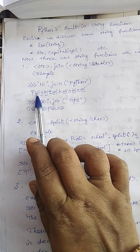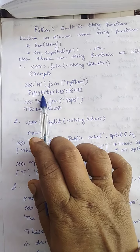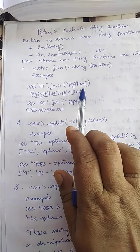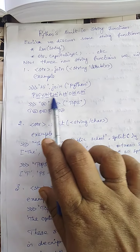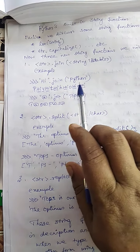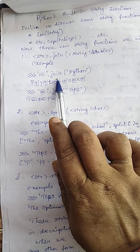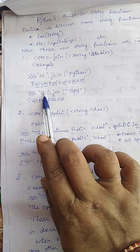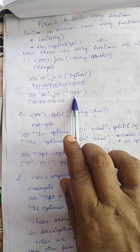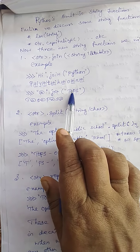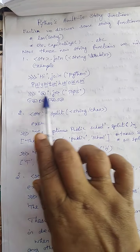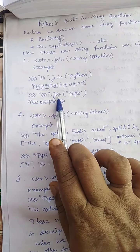See here: p then hi, next character y then hi, then t then hi, then h then hi, then o then hi, then n then hi. So this string 'hi' is going to be added in between each and every character. This is how the join function works. Similarly, '@' as a string character can be joined with the iterable 'tops': t then @, o then @, p then @, s then @. The characters join like this — that is the use of the join function.